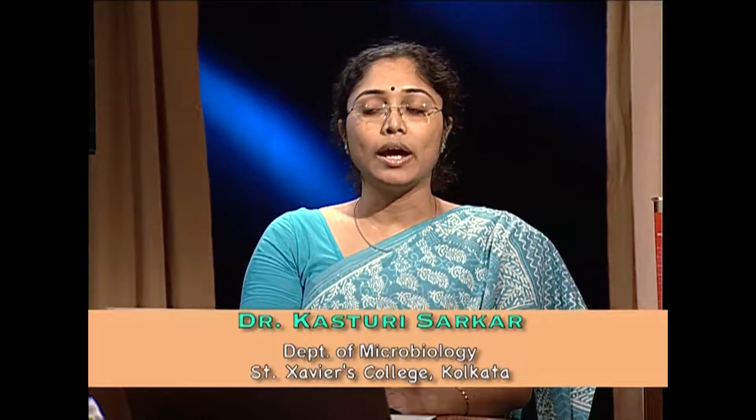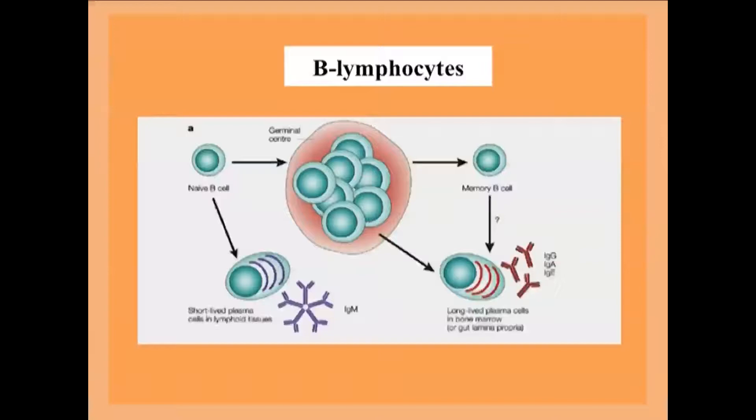Immunoglobulins are generated or secreted from B lymphocytes. B lymphocytes are developed in the bone marrow through a process called hematopoiesis. From bone marrow, after the generation of B cells, they come to blood and move between blood and lymph. When receptors on the B lymphocytes encounter an antigen, the B cell gets activated. Activated B cells are called plasma cells. Plasma cells secrete immunoglobulins or antibodies, and once activated, a plasma cell can secrete up to 1000 immunoglobulin molecules per cell per second.